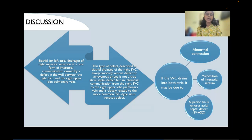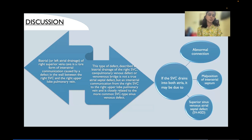Moving on to discussion: biatrial or left atrial drainage of the right superior vena cava is a rare form of interatrial communication caused by a defect in the wall between the right superior vena cava and the right upper lobe pulmonary vein. This defect is also described as biatrial drainage of the right SVC, cavo-pulmonary venous defect, or veno-venous bridge. It is not a true atrial septal defect but an interatrial communication, closely related to the more common SVC-type sinus venosus defect. The SVC draining into both atria may be due to abnormal connection, as in our case, or malpositioning of the interatrial septum.